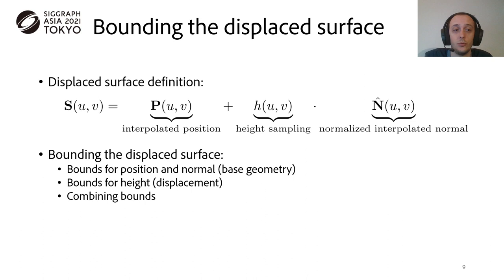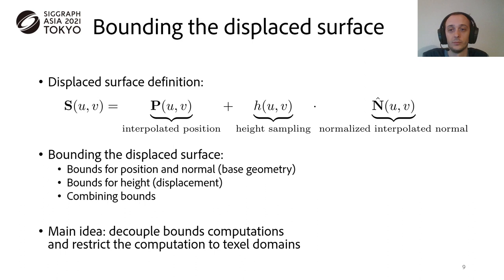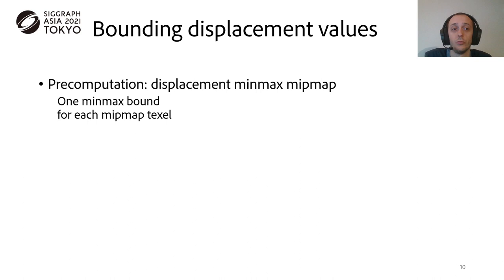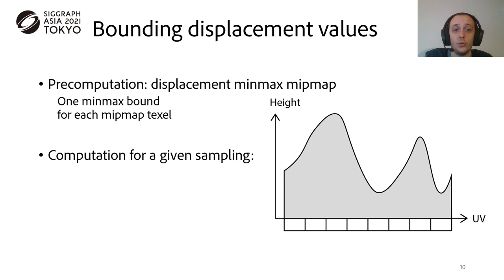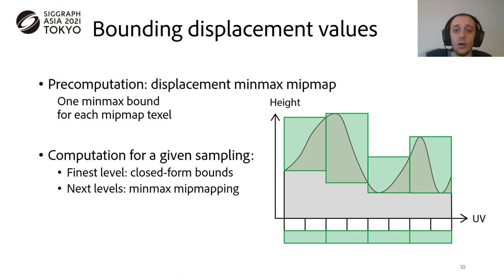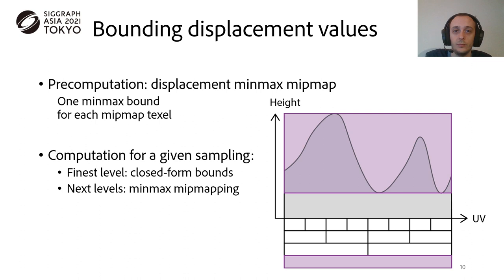Our main idea here is to decouple the two computations, and restrict the computation to UV domains corresponding to texels. Focusing first on the displacement, we rely on pre-computed bounds using a so-called min-max mipmap. The idea is simple. For each mipmap texel, we have to pre-compute a single min-max bound. Its computation is pretty straightforward. Given a height sampling, we first rely on a closed-form formula to compute bounds for the finest mip level. The remaining levels are simply obtained using a classical mipmapping, only replacing the averaging kernels by a min-max operation.